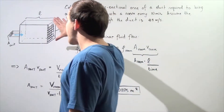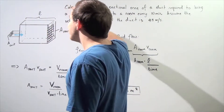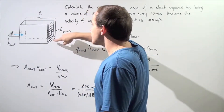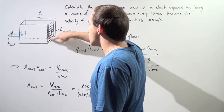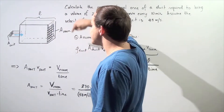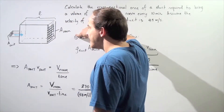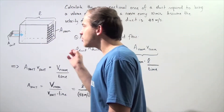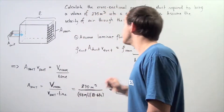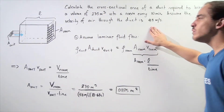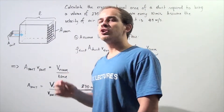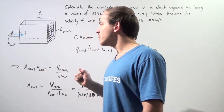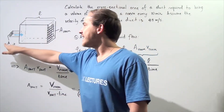Here we have our rectangular room, where the length of the room is given by L and the cross-sectional area of the room given by this face is A_room. Now let's look at our duct. We know that the velocity of air within the duct is 4 meters per second, and we want to calculate the cross-sectional area of our duct, A_duct.